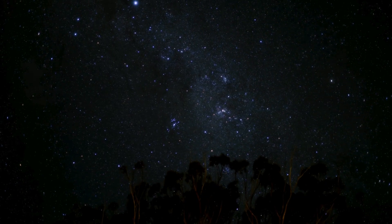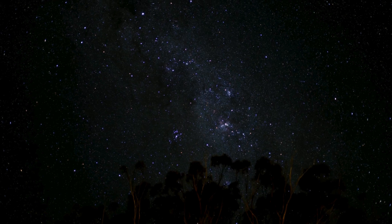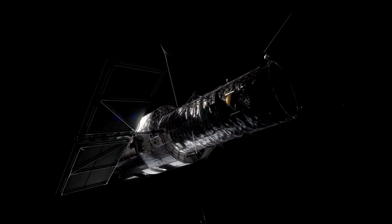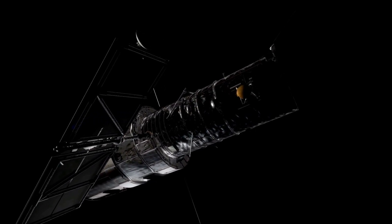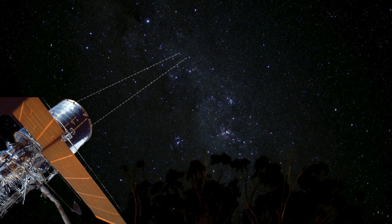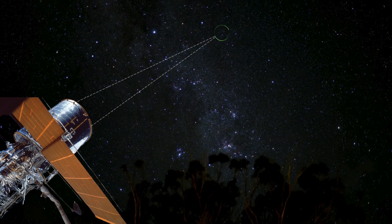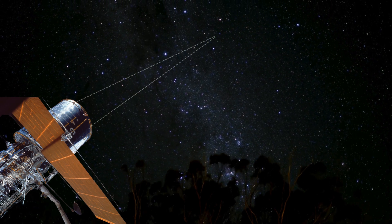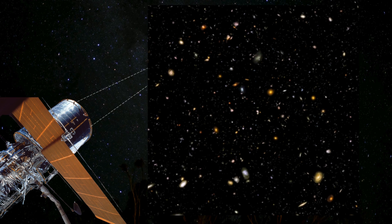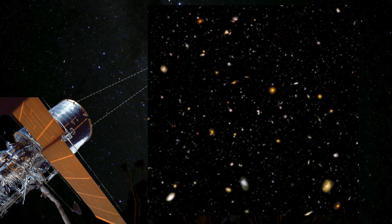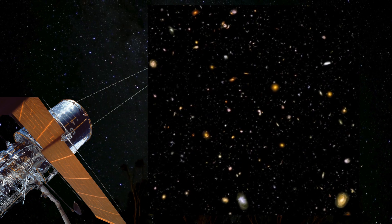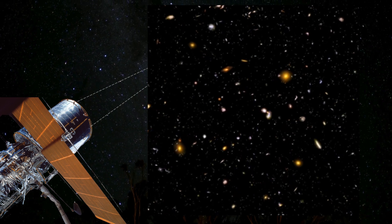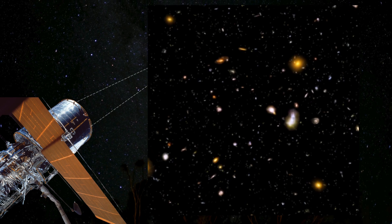Have you ever looked at a tiny patch of sky and wondered what's out there? In 2004, the Hubble Space Telescope did just that. It stared at a small patch of dark sky seemingly absent of any stars, but it looked for a long time and captured the famous Hubble Ultra-Deep Field image. Nearly every dot you see in this picture is a galaxy — some are nearby, others are billions of light years away.